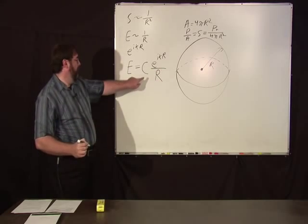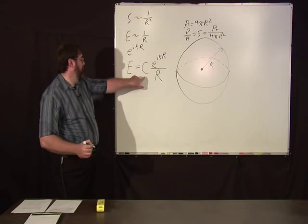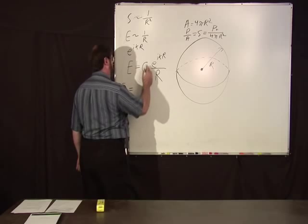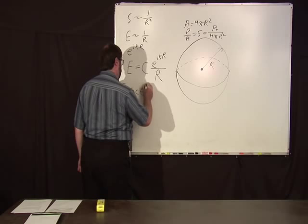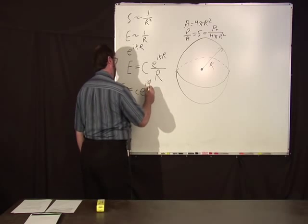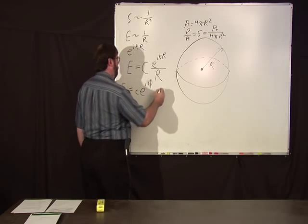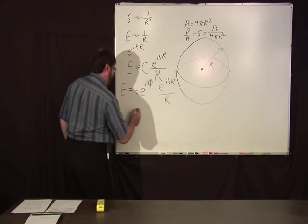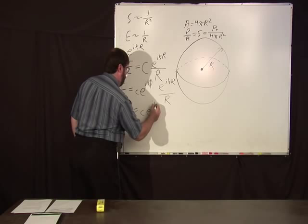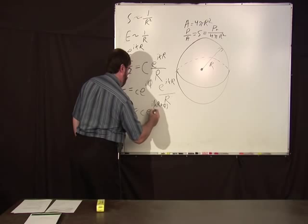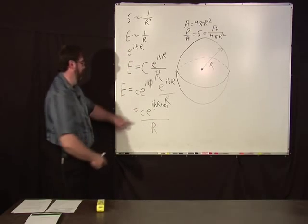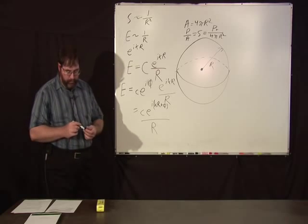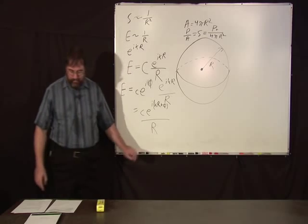This is a complex constant of some sort. We can break this into a magnitude and phase. So we'll say this is some real number c times e to the ikr over r, which can be written as c e to the i(kr + φ) over r. This is a real constant for the amplitude, and this is a real constant phase φ. Before we do anything with that, we've got to pay some bills.